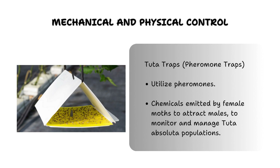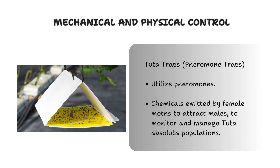Here at our tiny garden we focus on mechanical, physical, and biological control of Tuta absoluta. For mechanical control, we discuss Tuta traps, which are designed to attract and capture adult moths, thereby reducing their mating activity and egg-laying capacity. These traps typically consist of a sticky surface or a pheromone lure that attracts male moths. Once attracted, the moths become stuck on the adhesive surface, preventing them from mating and laying eggs on tomato plants.